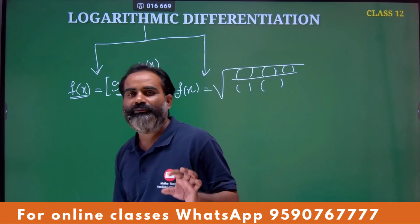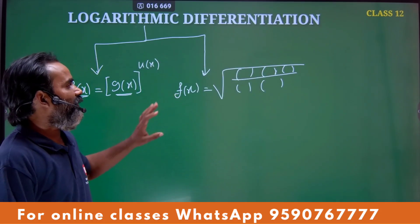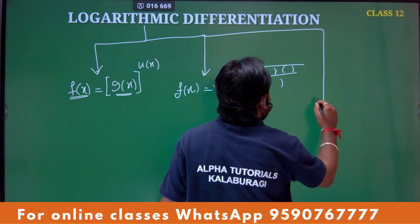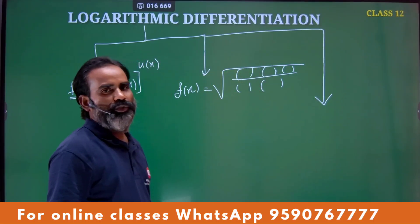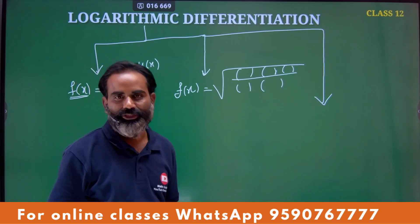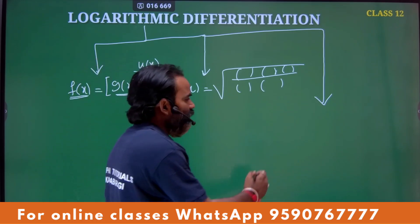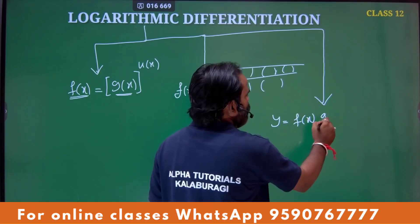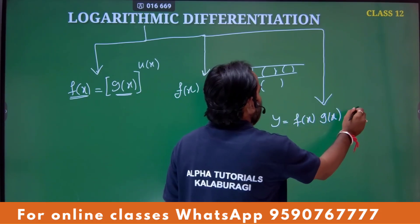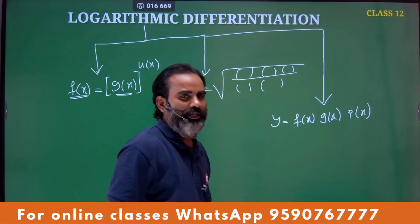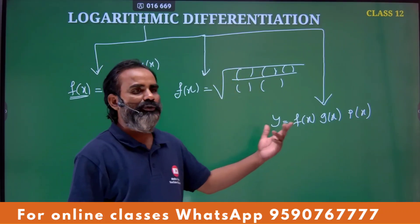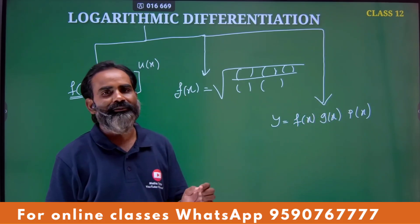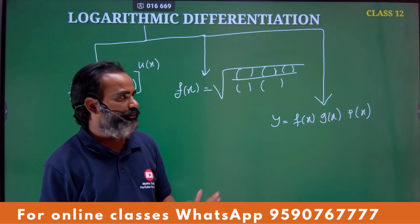This is the algorithm — it is very simple. You use three functions: F of x, G of x, P of x. This is the function — repeat it like cos x, different functions. Use the logarithm technique to solve.